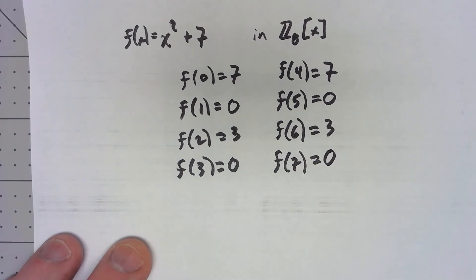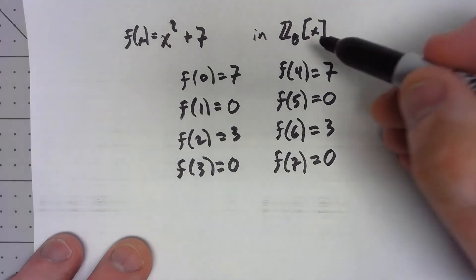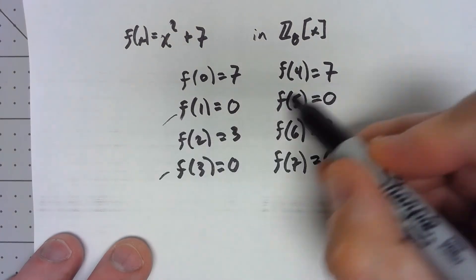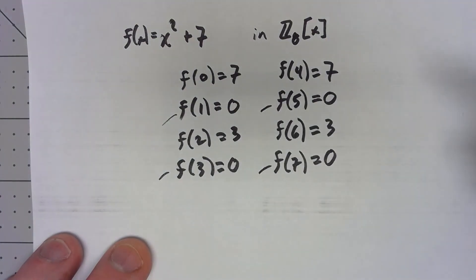So because this isn't a field I actually can have more than n zeros. I have four zeros even though it's only a second degree polynomial.